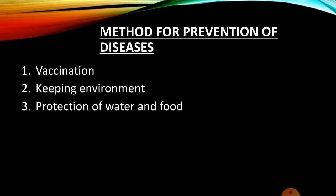Methods for prevention of diseases: Many methods are adopted to protect against diseases, including vaccination, keeping the environment clean, and protection of water and food. Vaccination is a commonly used method to protect against diseases. It is an injection given to people to protect them from diseases, and the substance introduced into the body through injection is called a vaccine.